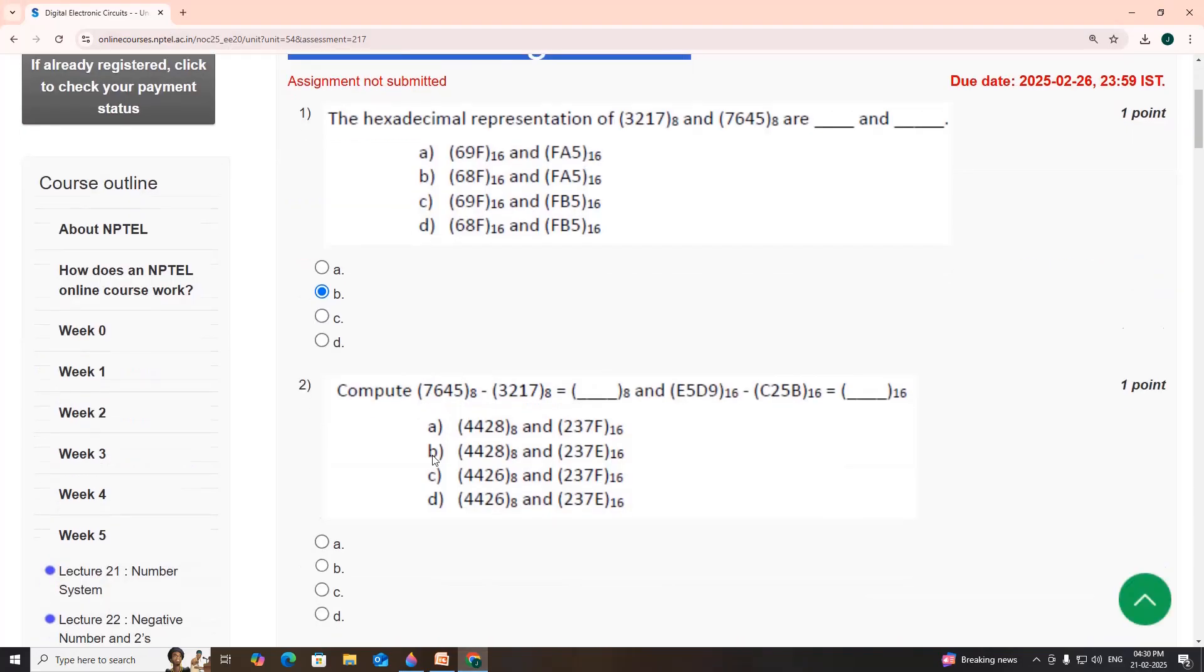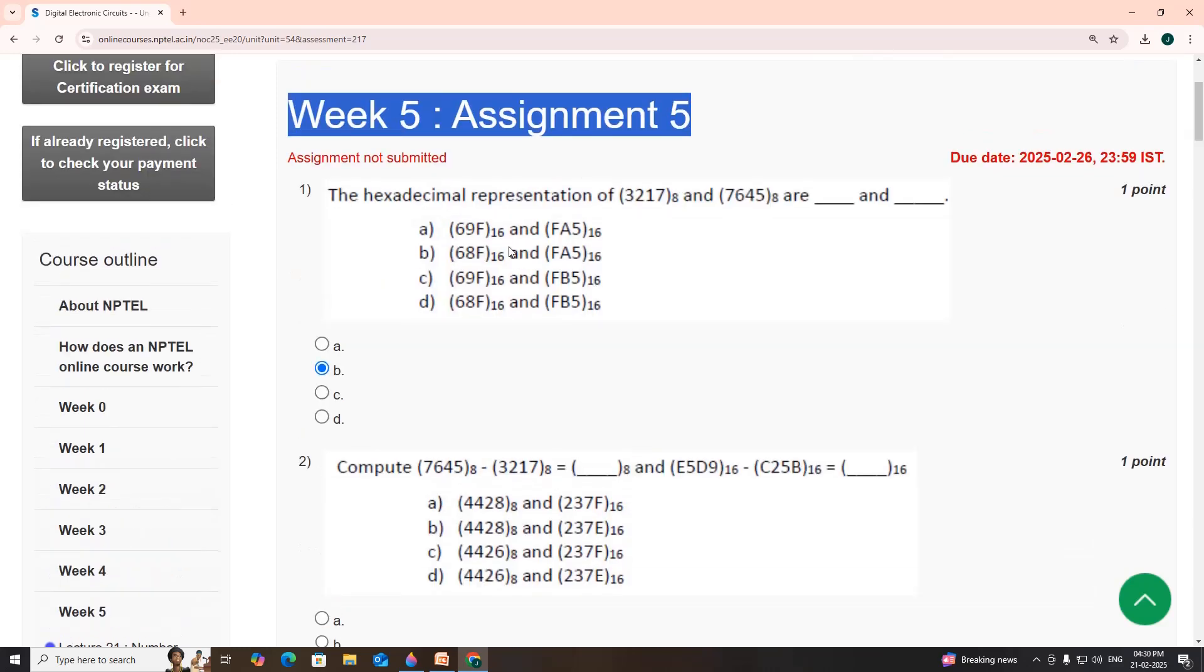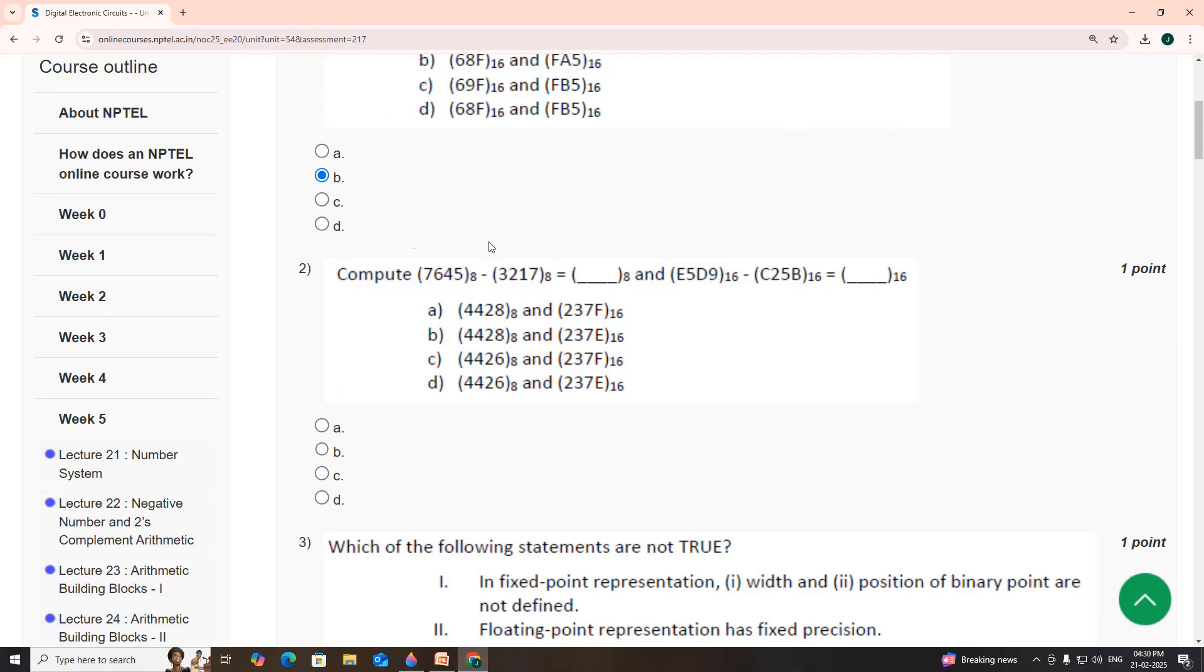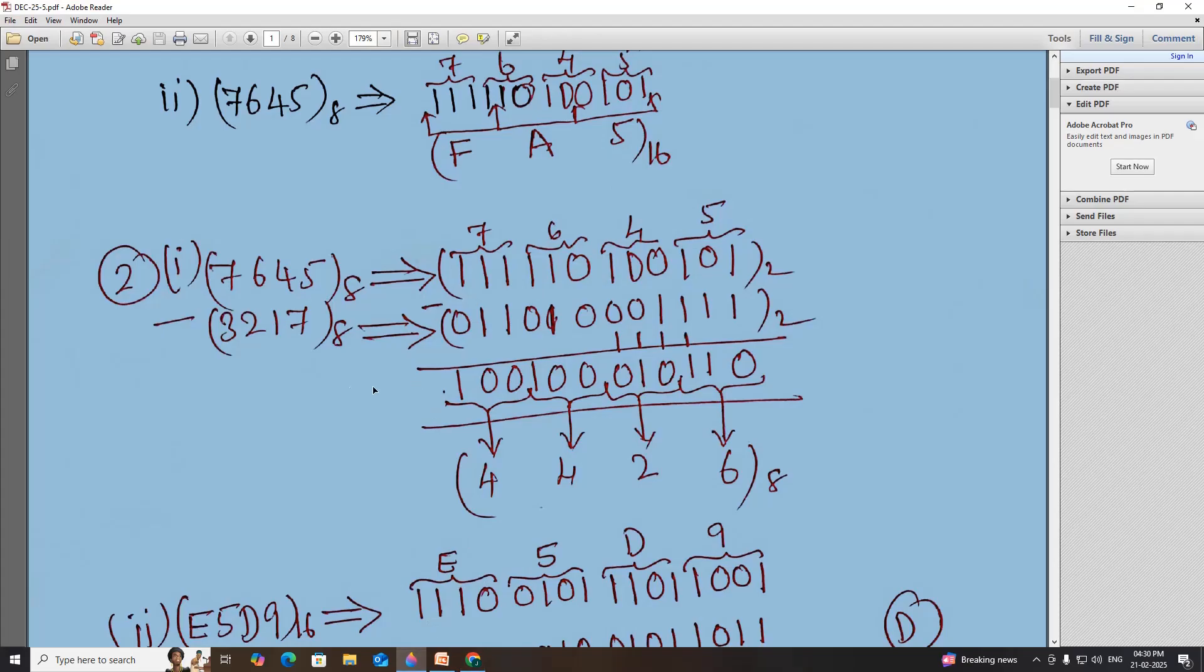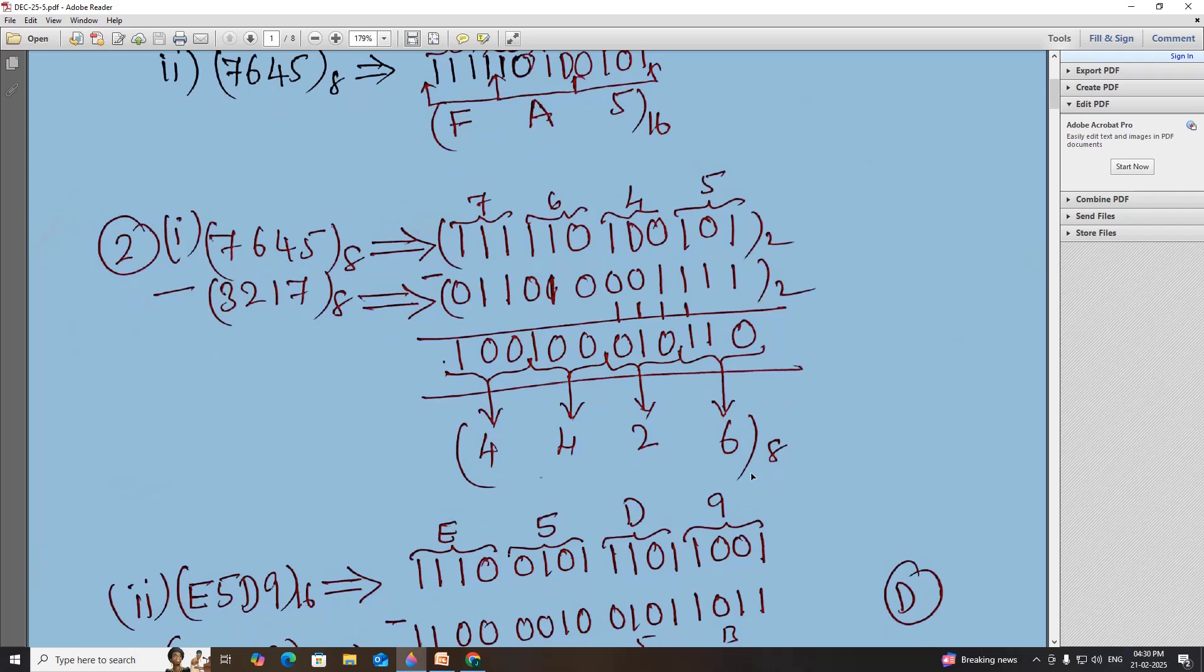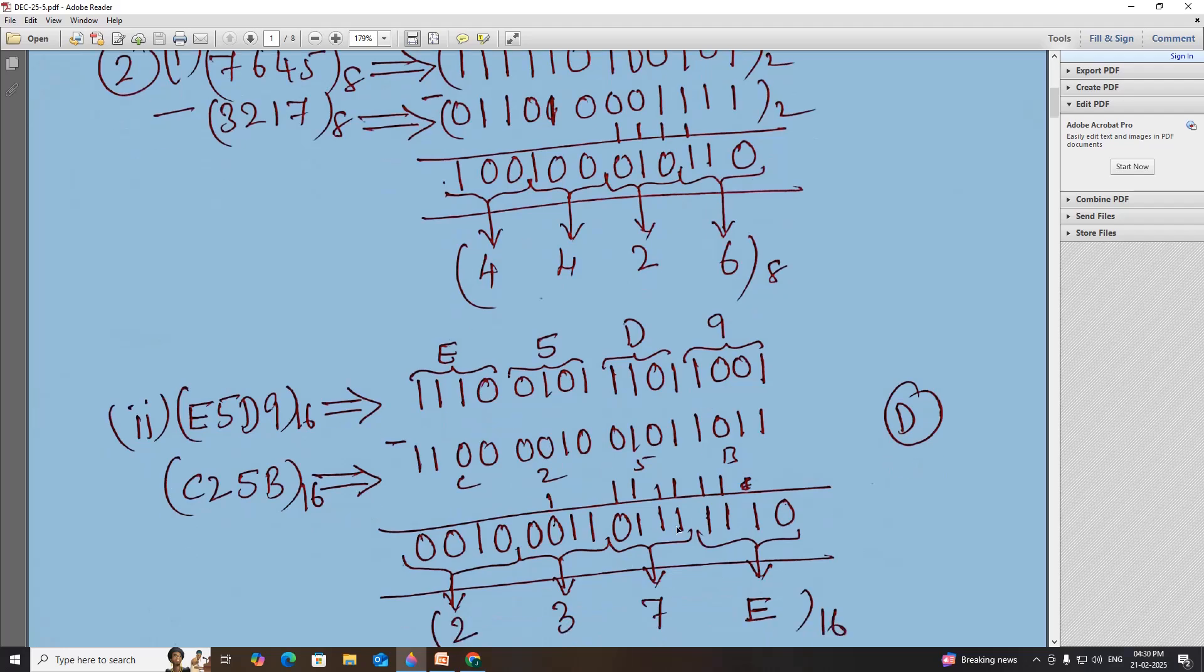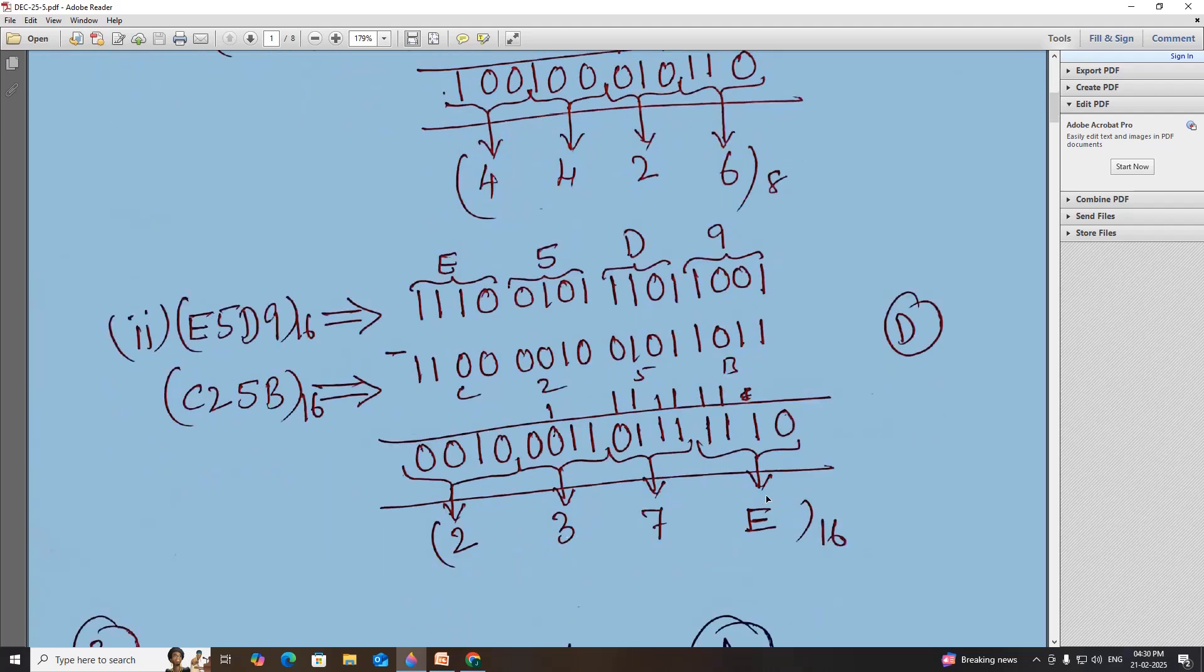Second one: we have to compute the same two numbers, subtract one from another. This is octal number system, this is decimal number system. The first one is octal, convert into binary. Convert the second number also into binary and then subtract. You will get a result converted back to octal which is 4426. Similarly for hexadecimal convert to binary, subtract one from another. You will get 237E.